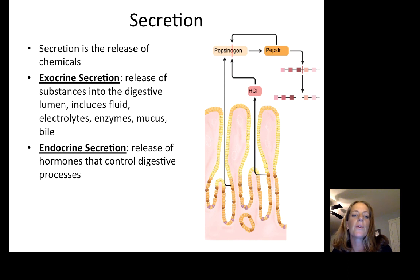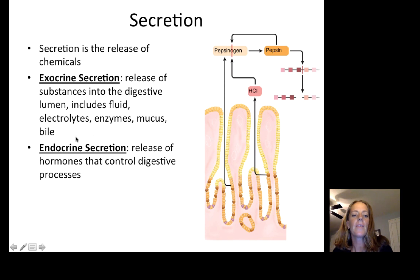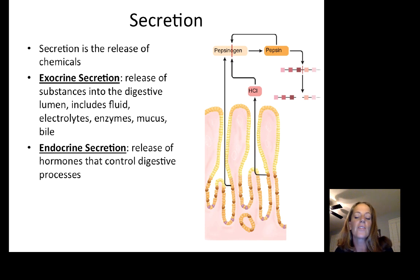Secretion is another major function — it is the release of chemicals. Specialized exocrine cells within regions of the digestive system release substances into the lumen, including fluid, electrolytes, enzymes, mucus, and in one specialized region, bile. There are also specialized endocrine cells that secrete hormones into the blood, which can act locally or long distance on digestive organs to control motility, secretions, and overall digestive tract function.